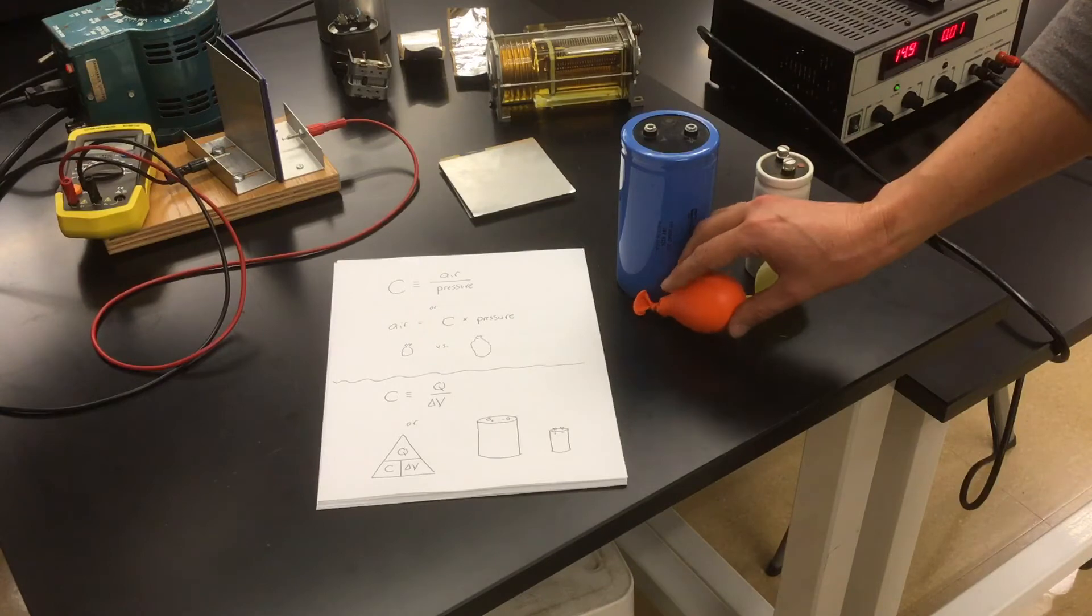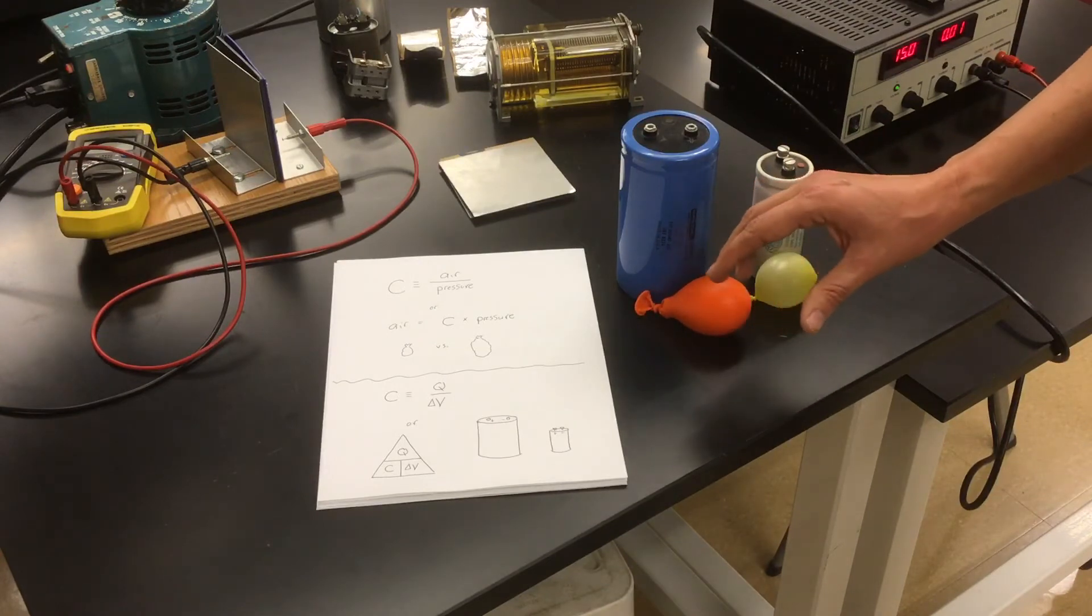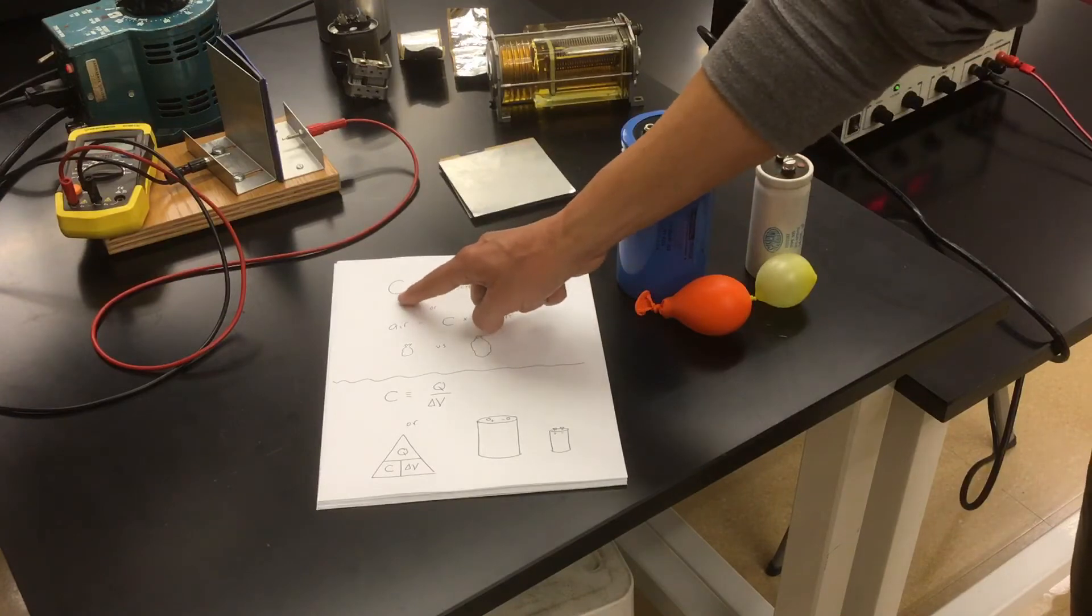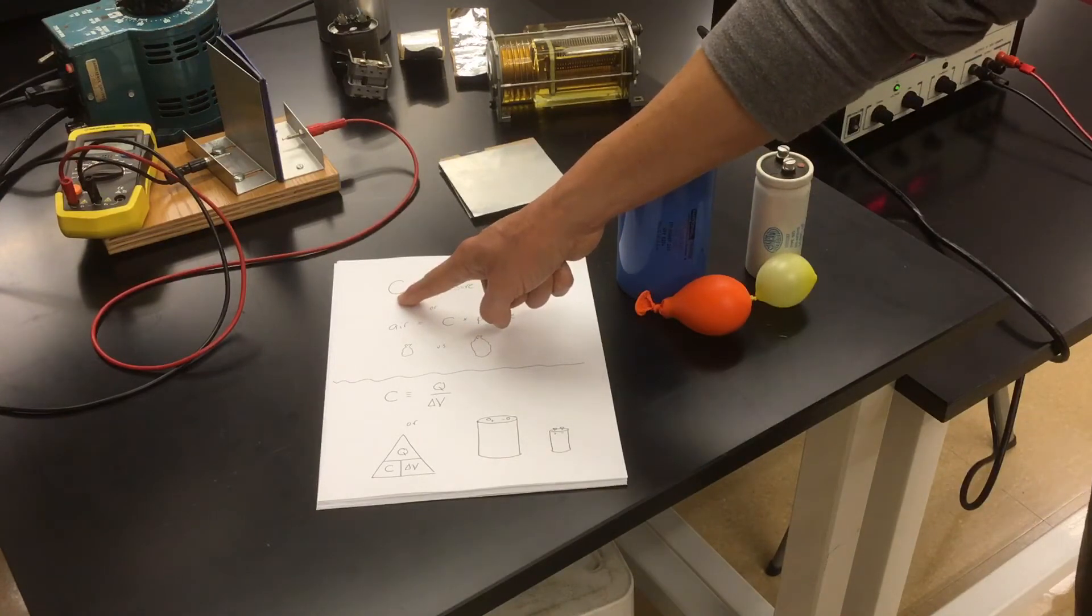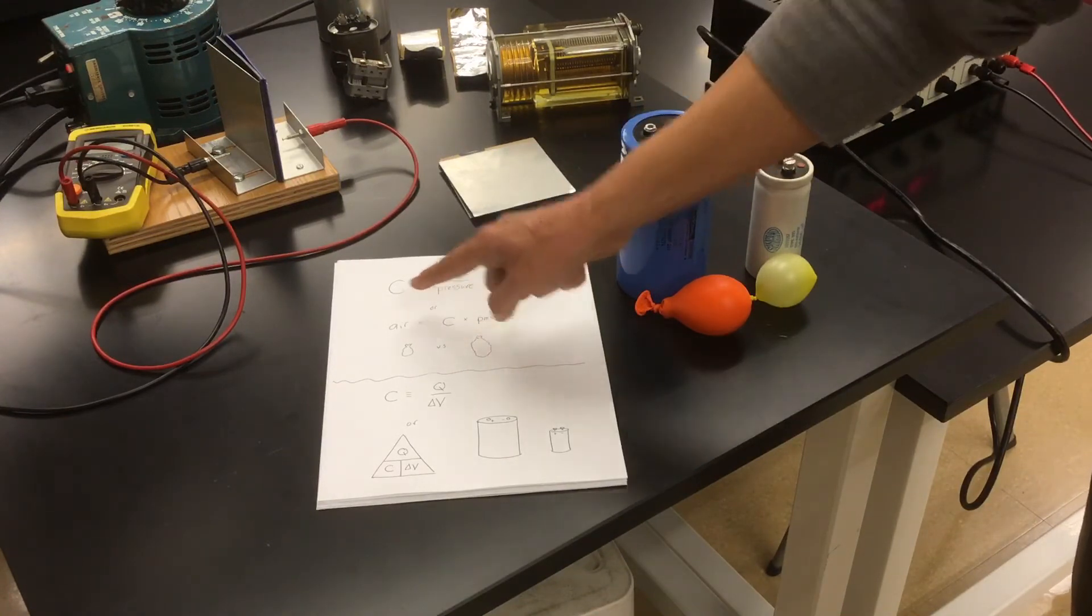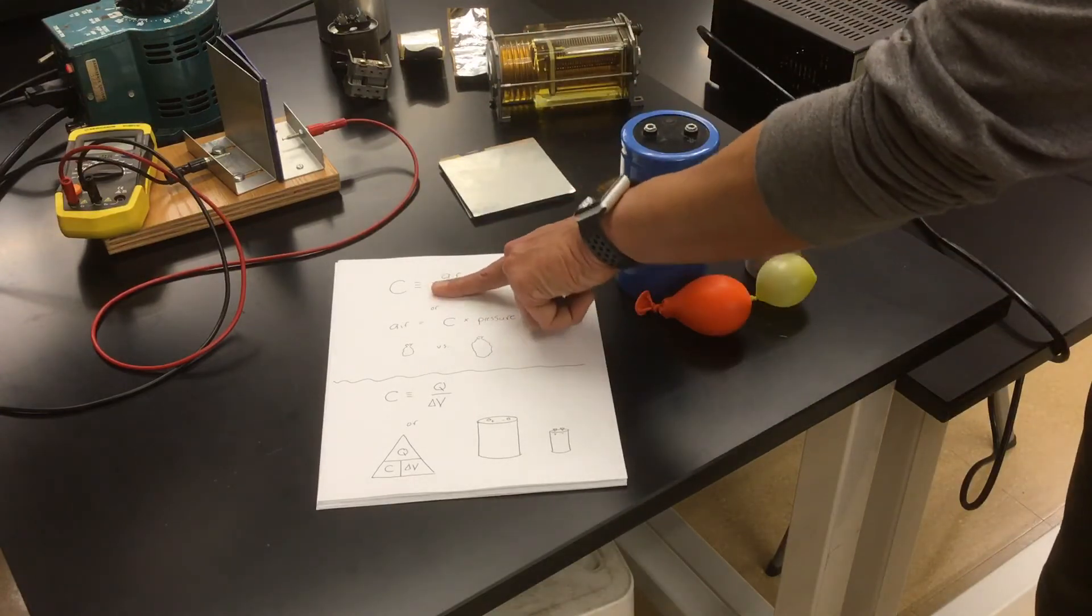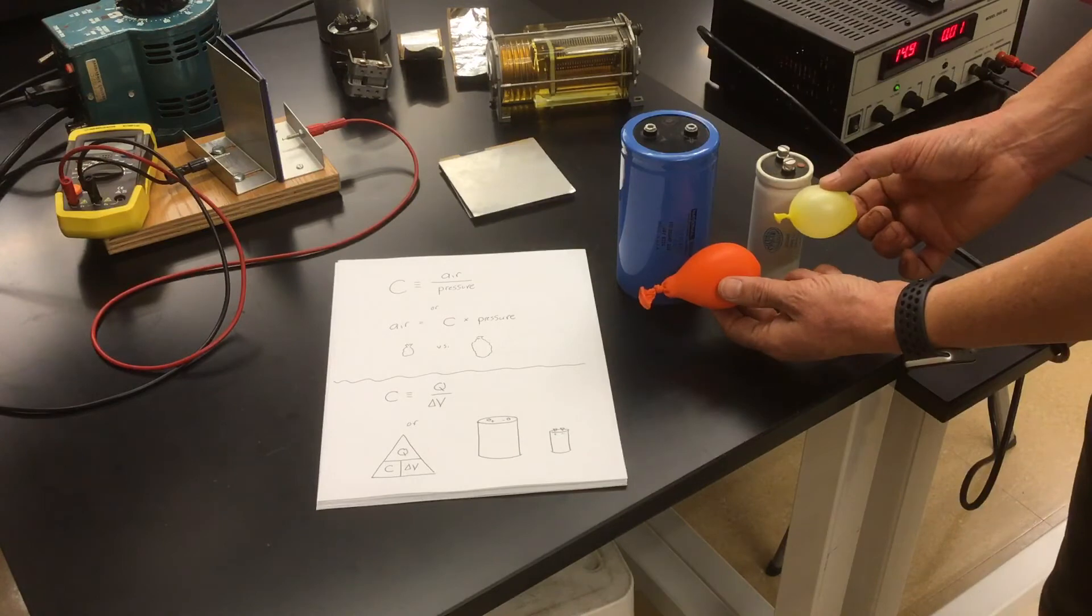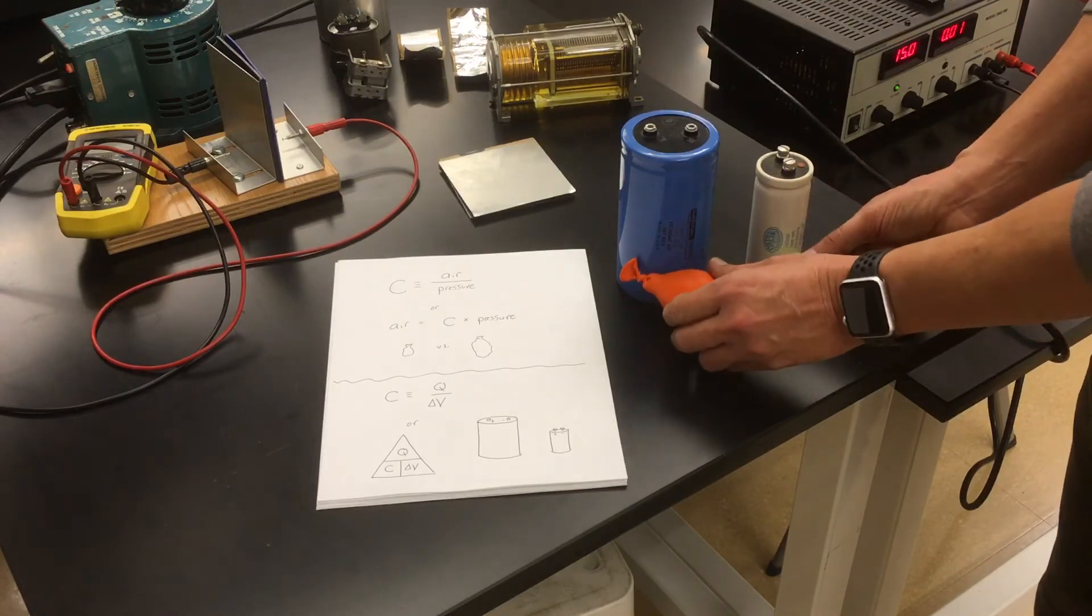So in any case, what we're talking about here is the balloon's capacity or ability to hold air. And we might define it like this: the balloon's capacity to hold air is equal to not necessarily the amount of air that it holds. If that's the case, look, these are both holding the same amount of air, but they certainly don't have the same capacity.